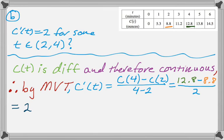So C prime of T equals 2 for some T in between 2 and 4. So yes, is the answer to the question. But make sure you say that C of T is differentiable and therefore continuous so that you're actually allowed to use the mean value theorem.